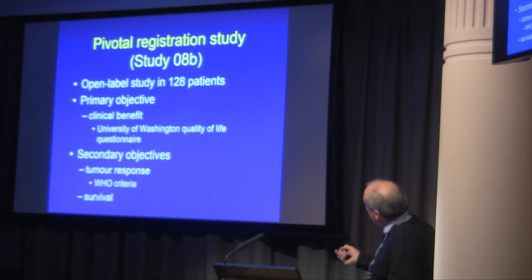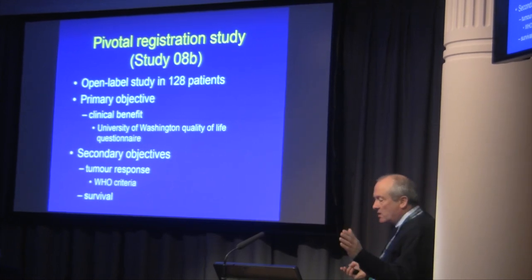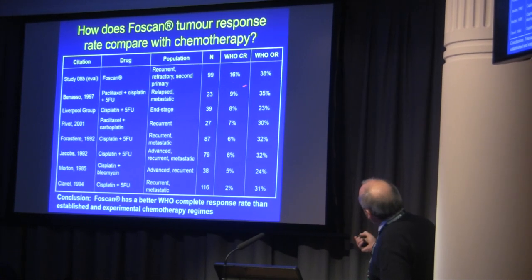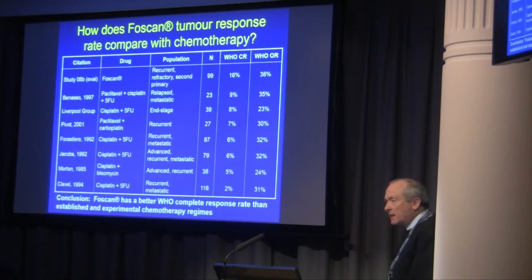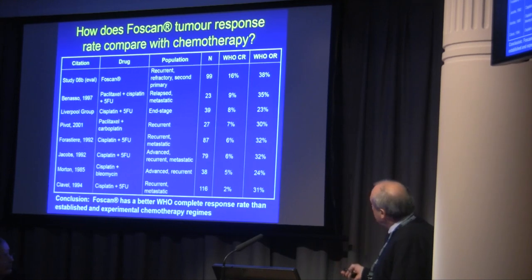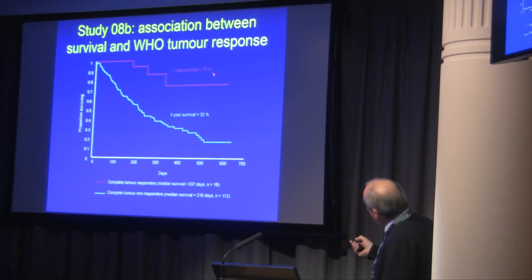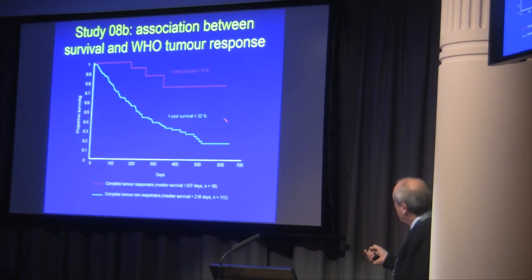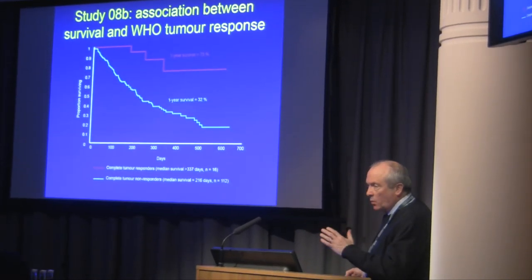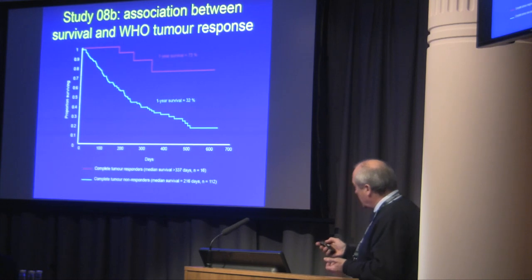Regulators weren't interested, so we had to do a separate study of 128 patients, primarily looking at clinical benefit. But these were patients who were end-stage disease — hopeless, everybody else had given up. When you look at the results, a 16% complete response rate, which is actually better than anything in chemotherapy terms. Even the new small molecules and checkpoint inhibitors have not done much better than that. That's what got the drug licensed. If you get a complete response, 73% of patients will survive a year. If you don't, the outlook's bleak. In head and neck cancer, if you don't eliminate all of the primary disease, you're going to die.